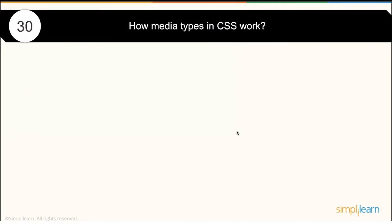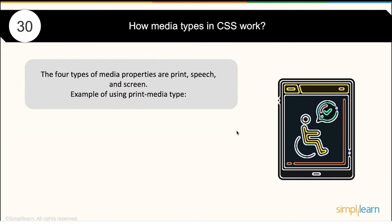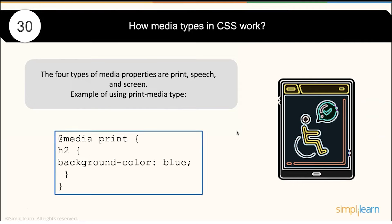How do media types work in CSS? There are four different types of media properties available: print, speech, and screen. For example, you add @media print and then specify styles for h2 — these styles change according to what media option you are targeting.